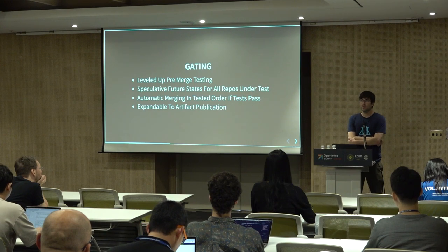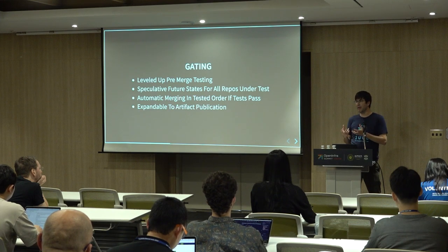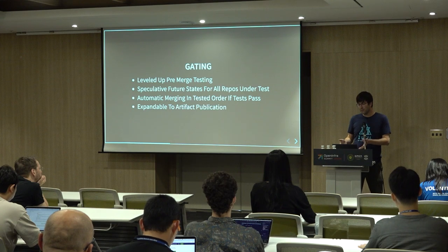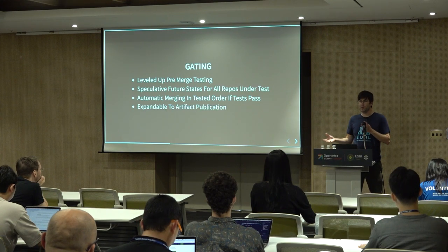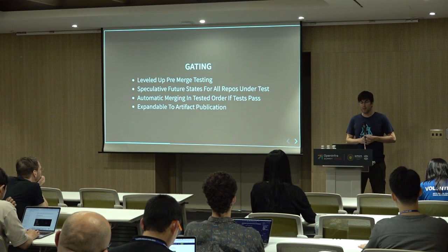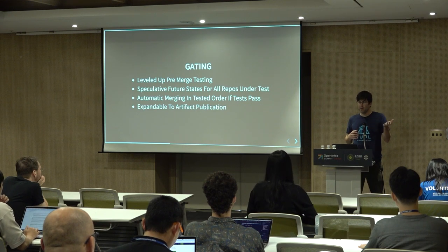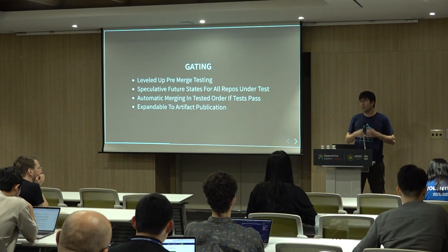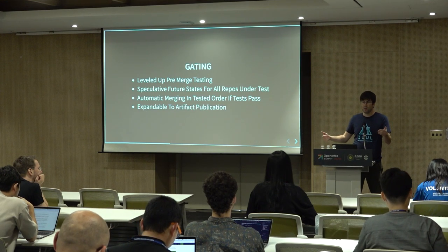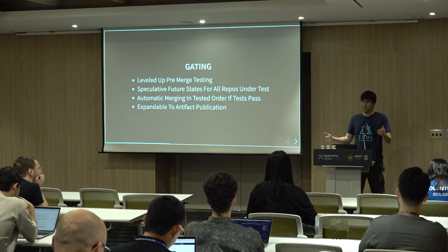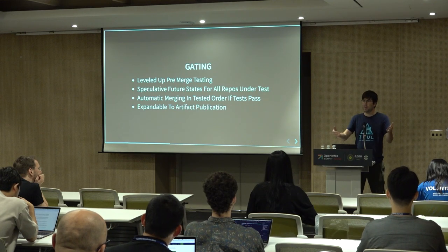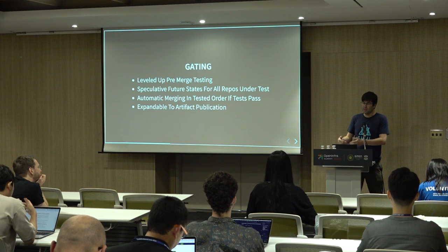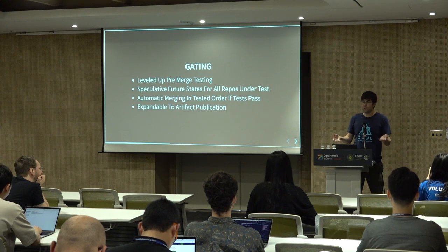One neat thing is that git commits are a special type of artifact — when you push a commit into a git repo, that's a way of publishing an artifact. So you can expand this system with gating, speculative states, and pre-merge testing to general artifacts. We've done that with container images. If you've got a container image in repo 1 and a container image in repo 2 that depends on the first one to build, we can do that with speculative states — test that those images work alongside the code that modifies them. When the code merges and passes gating, we can publish those same artifacts at the same time, treating those artifacts in the same way.